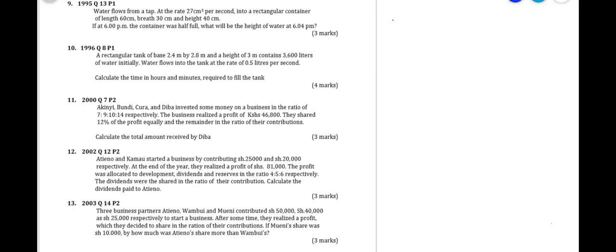In question 10, we have a rectangular tank of base 2.4 meters by 2.8 meters and a height of 3 meters. It contains 3600 liters of water initially. Water flows into the tank at the rate of 0.5 liters per second.